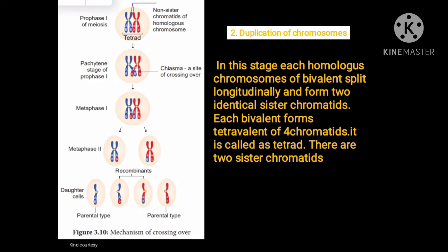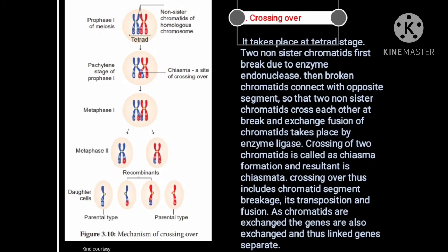The second stage is the duplication of chromosomes. In this stage, each homologous chromosome of a bivalent splits longitudinally and forms two identical sister chromatids. Each bivalent forms a tetravalent of four chromatids; it is called a tetrad. There are two sister chromatids, as observed in the figure.